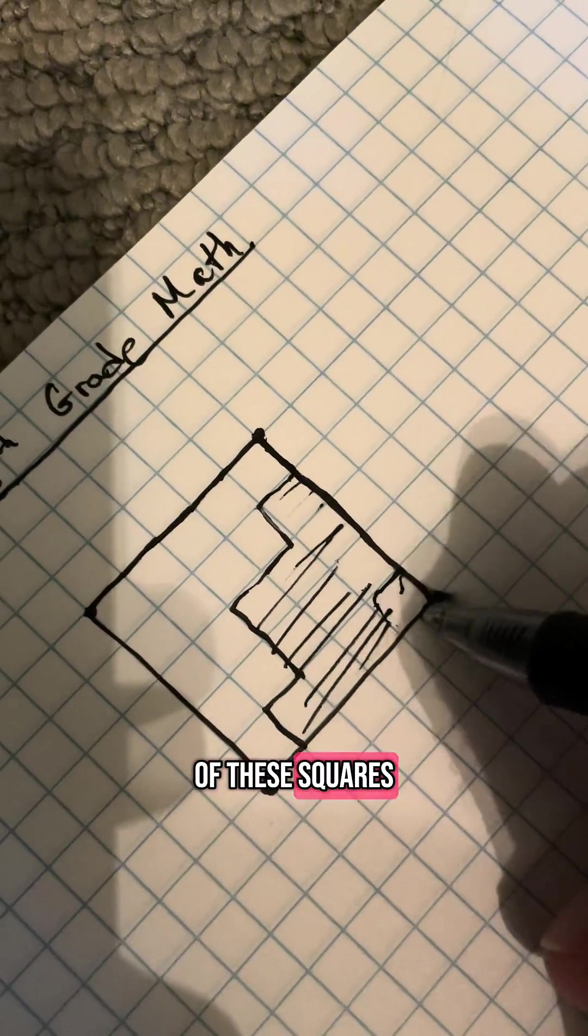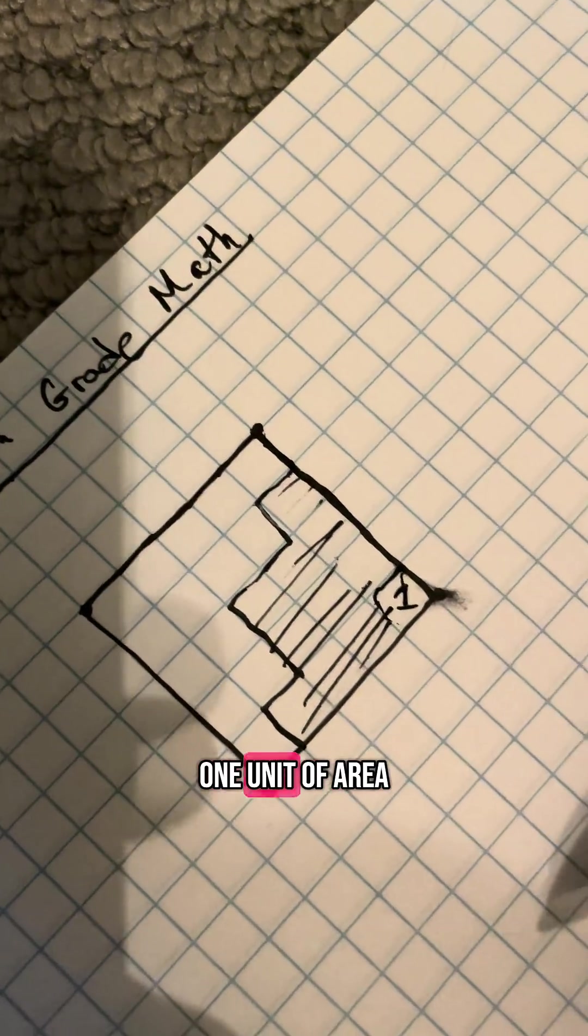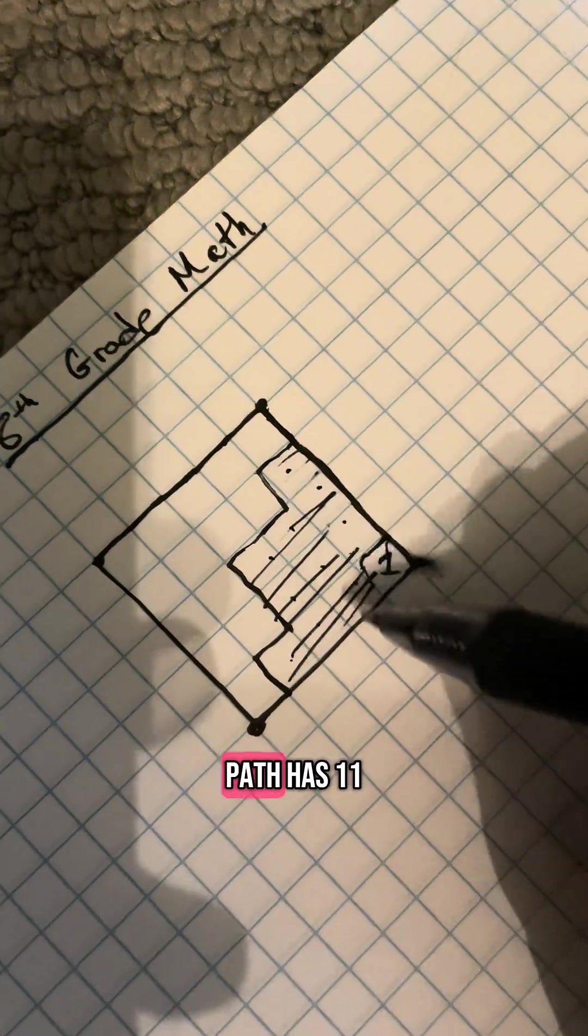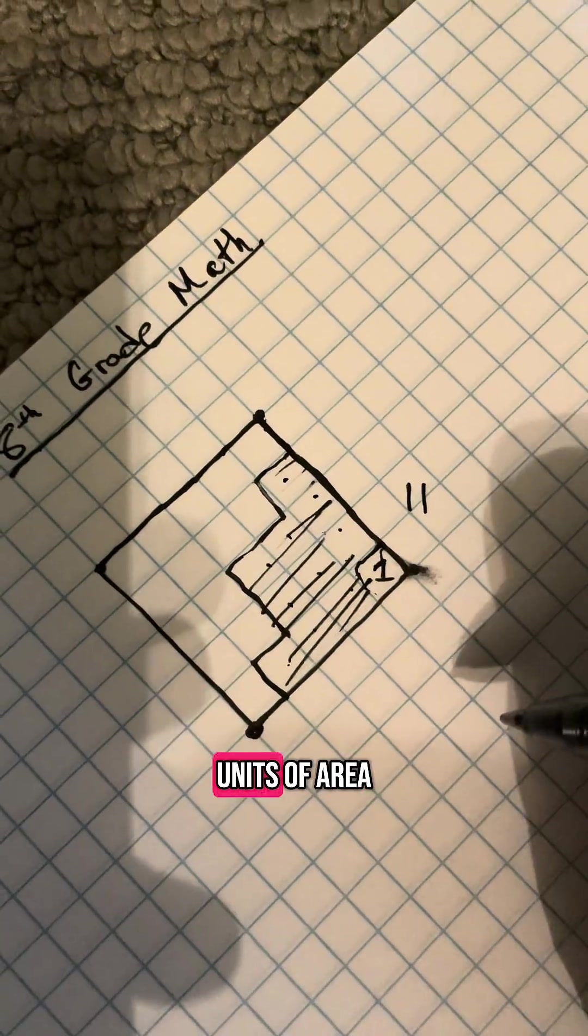assuming that each of these squares right here represents one unit of area. In this case, the path that we traced out, the shape that is to the right of that path has 11 units of area.